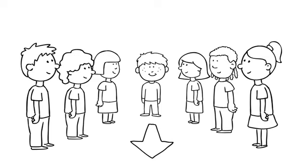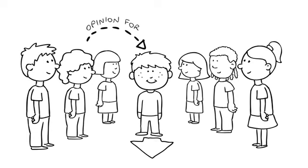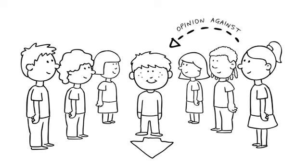Now, ask the child in role to walk down the alley. As they pass along the line, one child from each side takes it in turn to put forward their particular point of view.